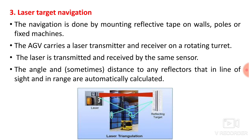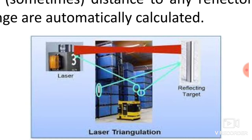The third technique is laser target navigation. Here laser light is used for navigation. Reflective tape is mounted on walls, poles, or fixed machines. The AGV carries a laser transmitter and receiver on a rotating turret. The laser is transmitted and received by the same sensor on the AGV, while reflecting targets are mounted on the walls. The angle and sometimes distance to any reflector in line of sight and in range are automatically calculated.